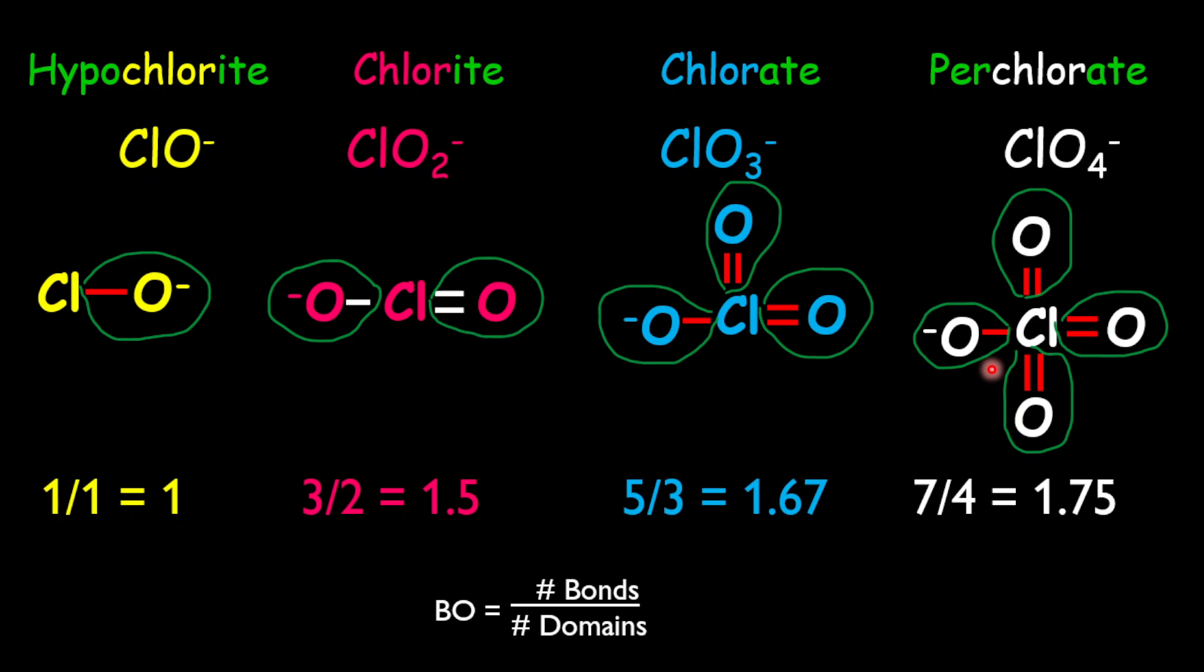Now, there are a few things I want to point out right here. Once the structure can form resonance, the number of domains equals the number of resonance as well. Because you could shift the single bond around these three oxygens, for example, in the chlorate ion, it can be shifted between all three oxygen atoms.